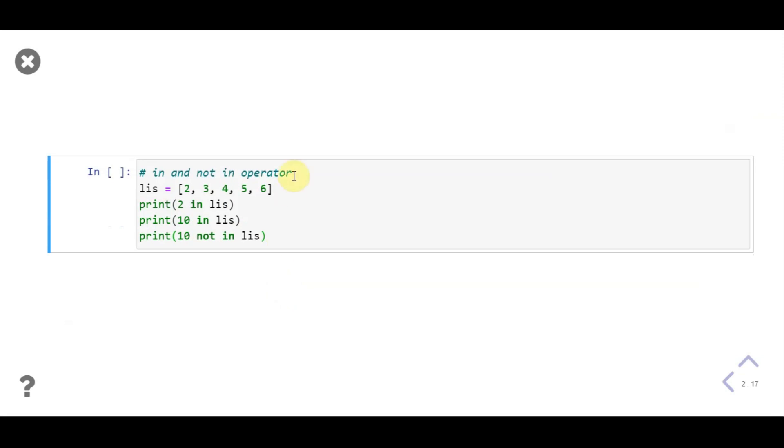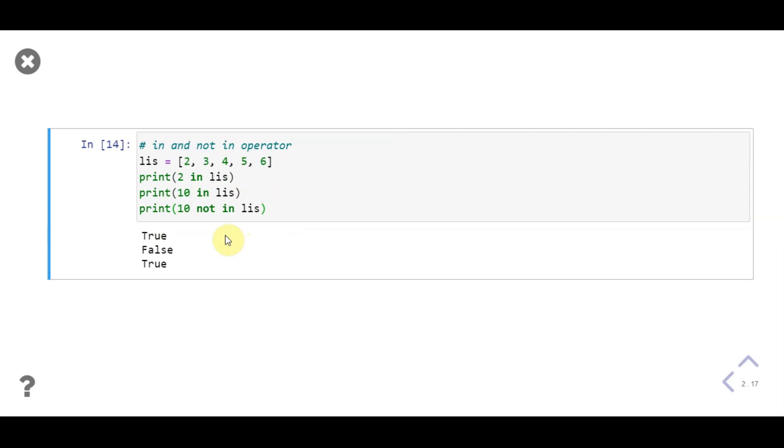Now let's see some more examples of 'in' and 'not in' operators. First we declare a list variable 'lis' with values 2, 3, 4, 5, and 6. Then we use the 'in' operator to check if 2 is there in the list or not. We'll also check if 10 is in the list or not using 'in' and 'not in' operators. See, we got true, false, true in output, as 2 was there in the list but 10 was not there.